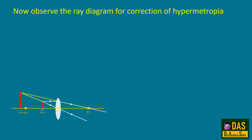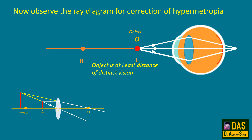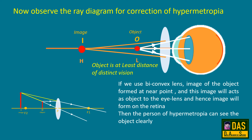Now observe the ray diagram for correction of hypermetropia. When the object is at the least distance of distinct vision, the rays refract at the eye lens and form an image beyond the retina. But when we use a biconvex lens, the image of the object forms at the near point. This image acts as the object for the eye lens, and hence the image forms on the retina, allowing the person with hypermetropia to see clearly.